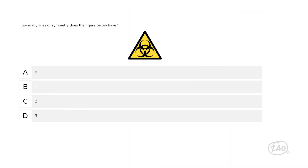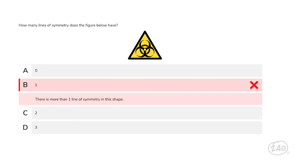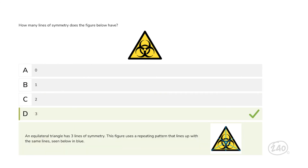One more to go — geometry and spatial concepts. How many lines of symmetry does the figure below have? I see one line of symmetry right down the middle of this triangle. But I can draw the same line of symmetry from each of the three corners, so 3 is the right answer.